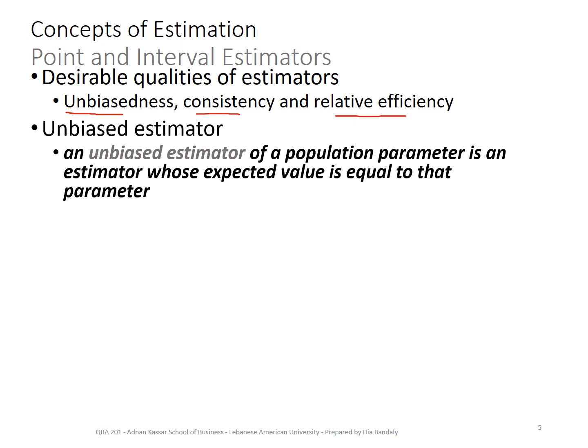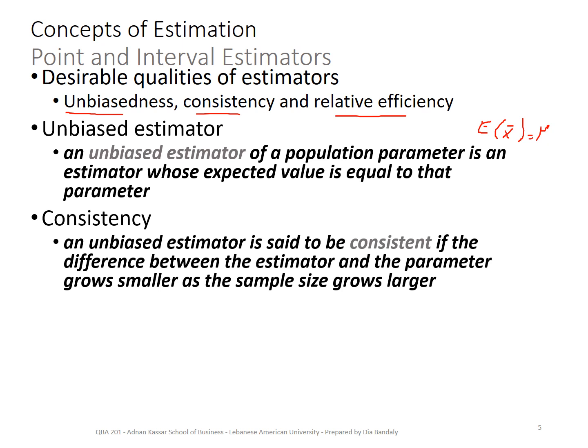An unbiased estimator is one whose expected value is equal to the parameter. This is a clear property of x-bar: from the sampling distribution topic, we learned that E(x-bar) equals mu. So x-bar has this unbiased property.